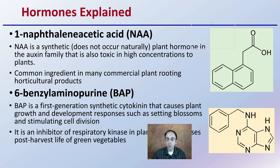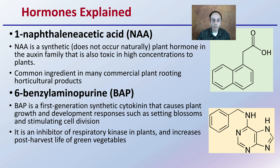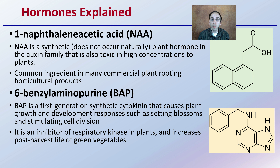The two hormones, NAA and BAP, are the ones that were studied. NAA is synthetic, meaning it does not occur naturally — it's a plant hormone in the auxin family. This auxin family can also be toxic at high concentrations to plants, so concentration and dose is very important. It's the common ingredient in many plant-rooting and natural horticultural products.